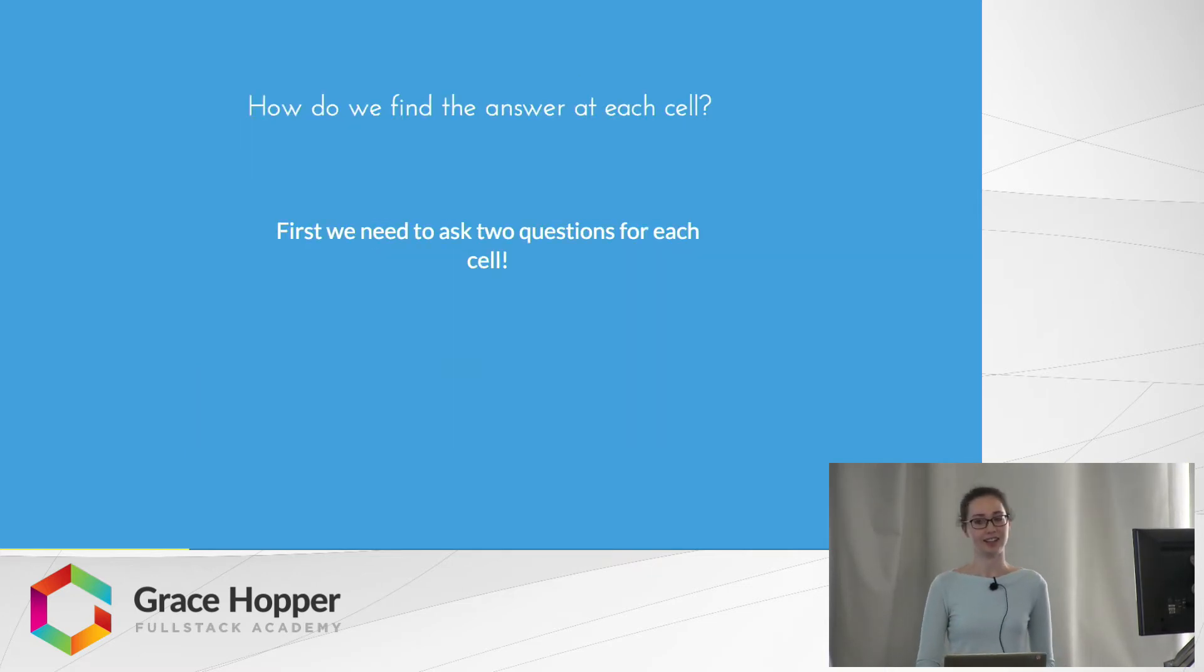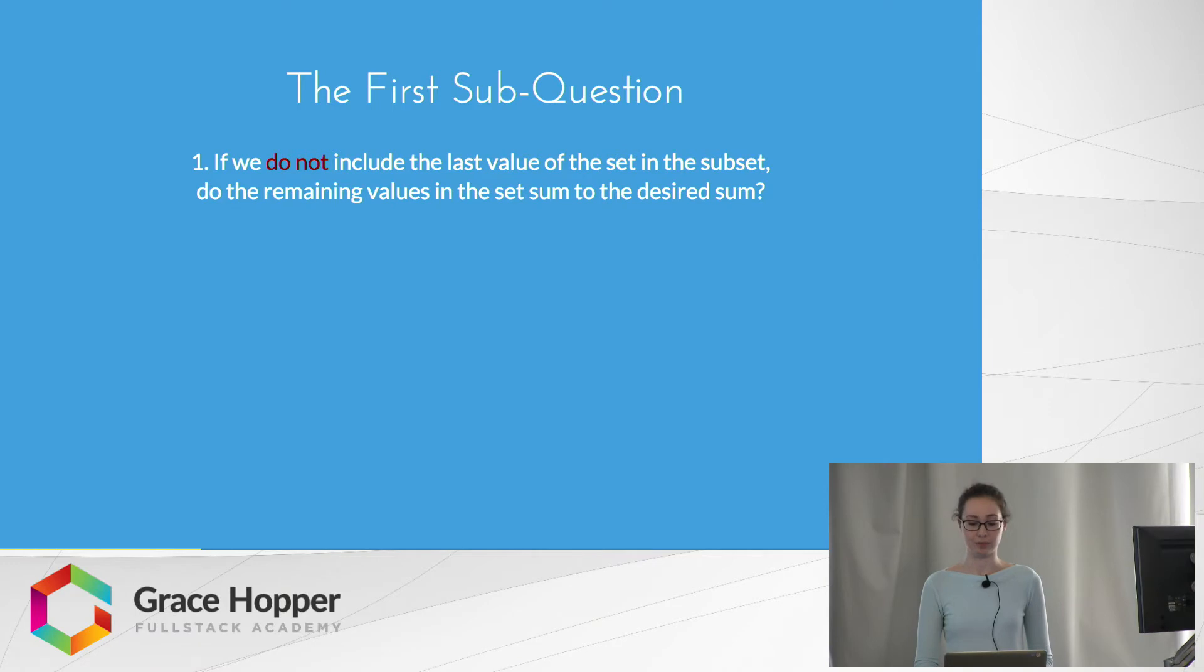How do we find the answer at each of these cells? First, we need to ask two sub-questions for each cell. The first sub-question is: if we do not include the last value of the set in the subset, do the remaining values in the set sum to the desired sum? As an example, if we have the set {1, 2} and we want it to sum to 1, one possibility is that we don't include that last value 2 in the subset. So 2 is not in the subset, and the question is: of the remaining values in the set, is there a way to make them sum to 1? In this case, the remaining part of the set is just {1}, and we know that yes, that sums to 1. So that's our subset.